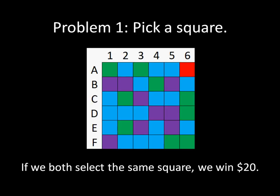Here's the first problem. I want you to pick a square — there are thirty-six squares on your screen, just select one. And if we both select the same square, we win twenty dollars. If you're watching this on YouTube, go to the comments section and write problem one and then select a square using the letters and numbers provided.